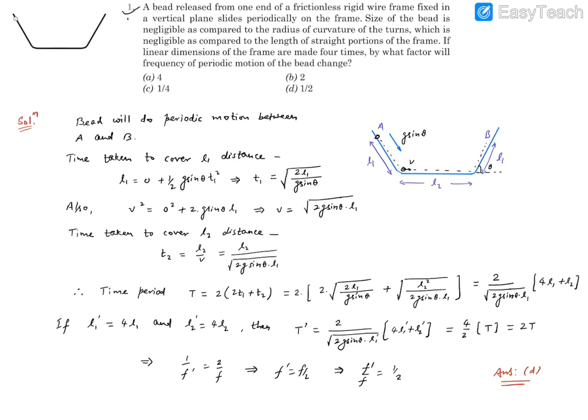Hello, consider question number one. It reads that there's a bead which is released from one end of a frictionless rigid frame which is fixed on a vertical plane and it slides periodically on the frame.